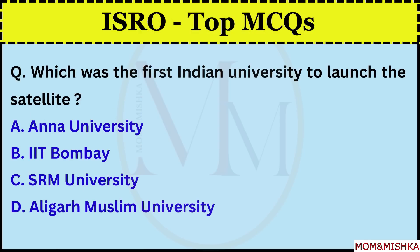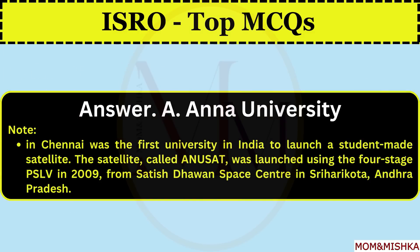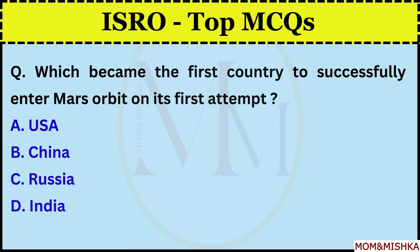Which was the first Indian university to launch a satellite? Anna University, option A, in Chennai. It was the first university in India to launch a student-made satellite. The satellite called ANUSAT was launched using the four-stage PSLV in 2009 from Satish Dhawan Space Center in Sriharikota. Which became the first country to successfully enter Mars orbit on its first attempt?